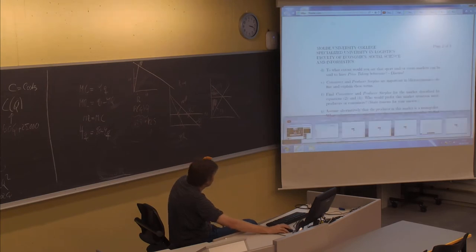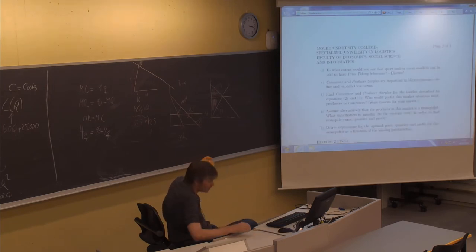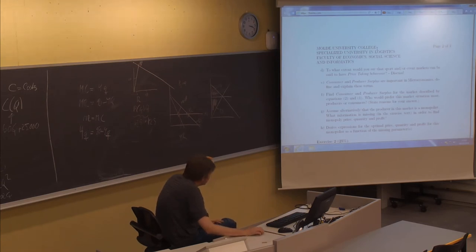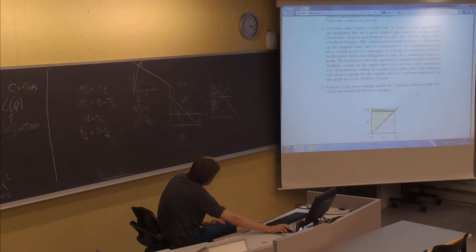F, find consumer and producer surplus for the market described by equations 2 and 1. We have these equations, and then of course we need to find these two areas. We have our figure already, don't we? Here it is.